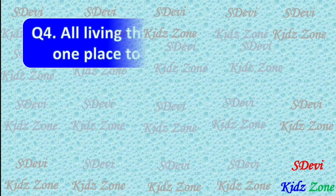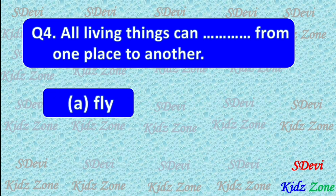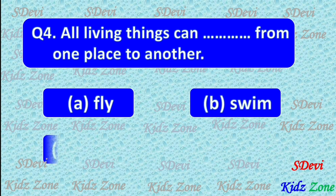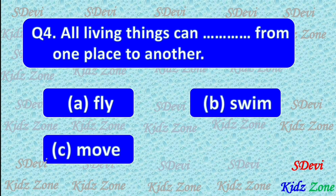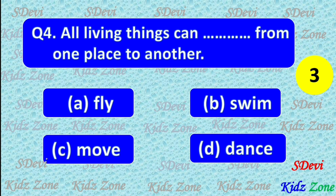Question number 4. All living things can ___ from one place to another. A. Fly. B. Swim. C. Move. D. Dance. The correct answer is C. Move.